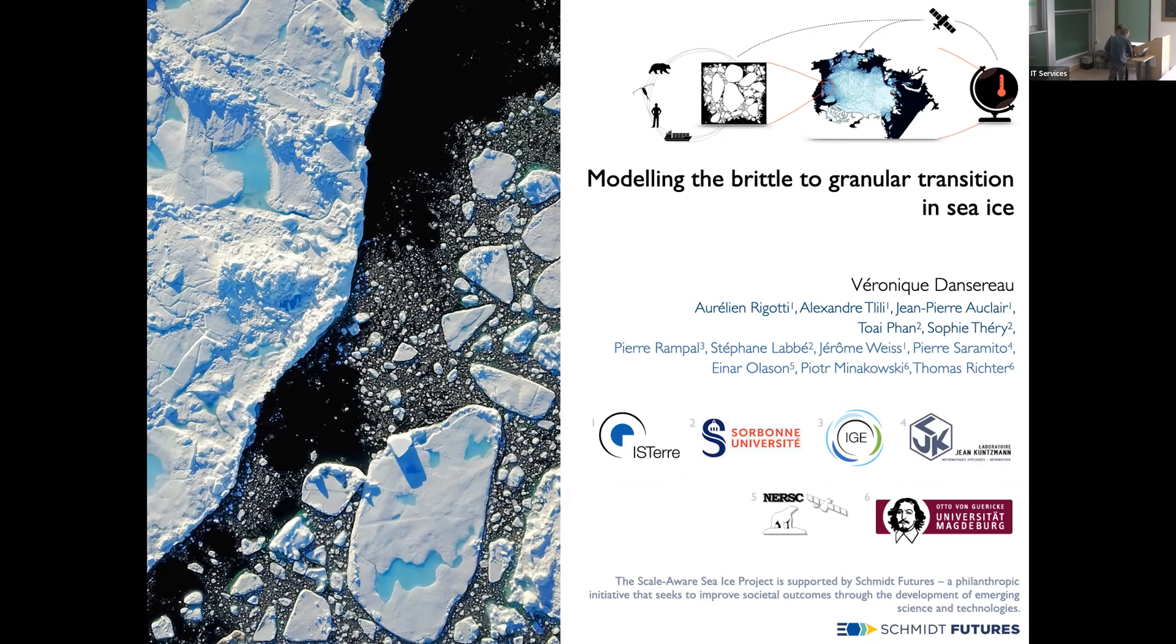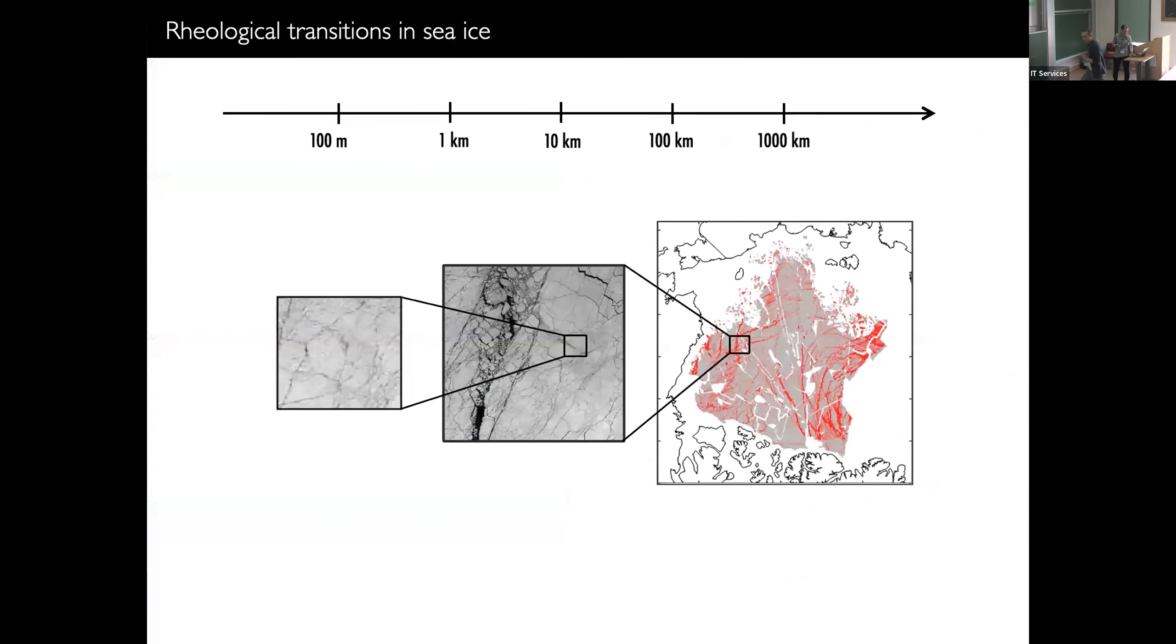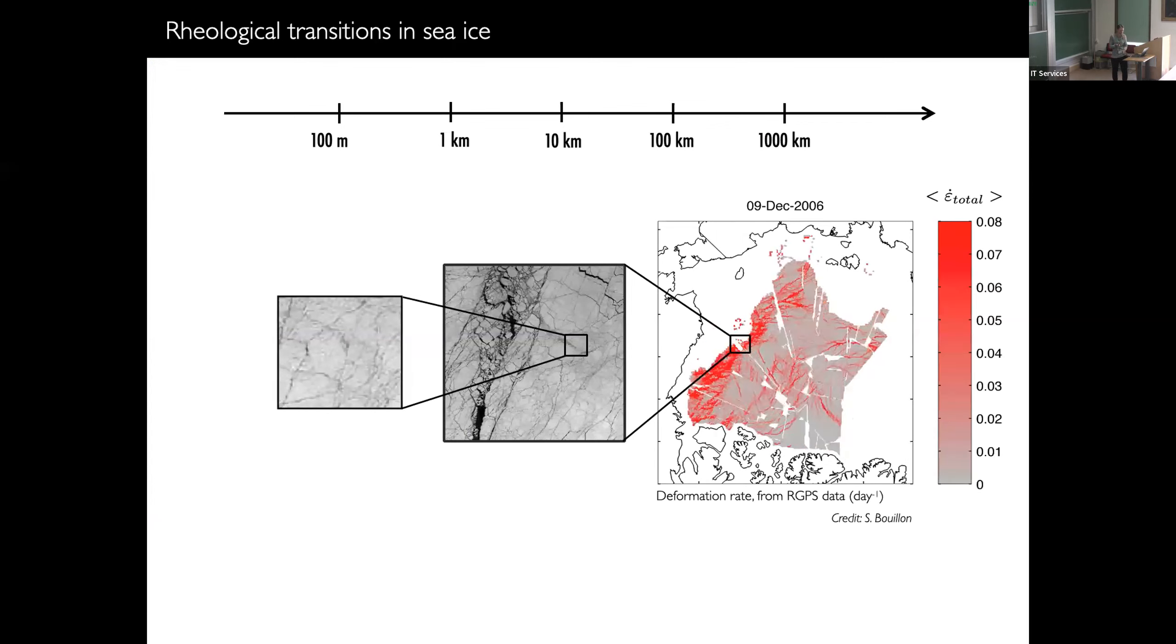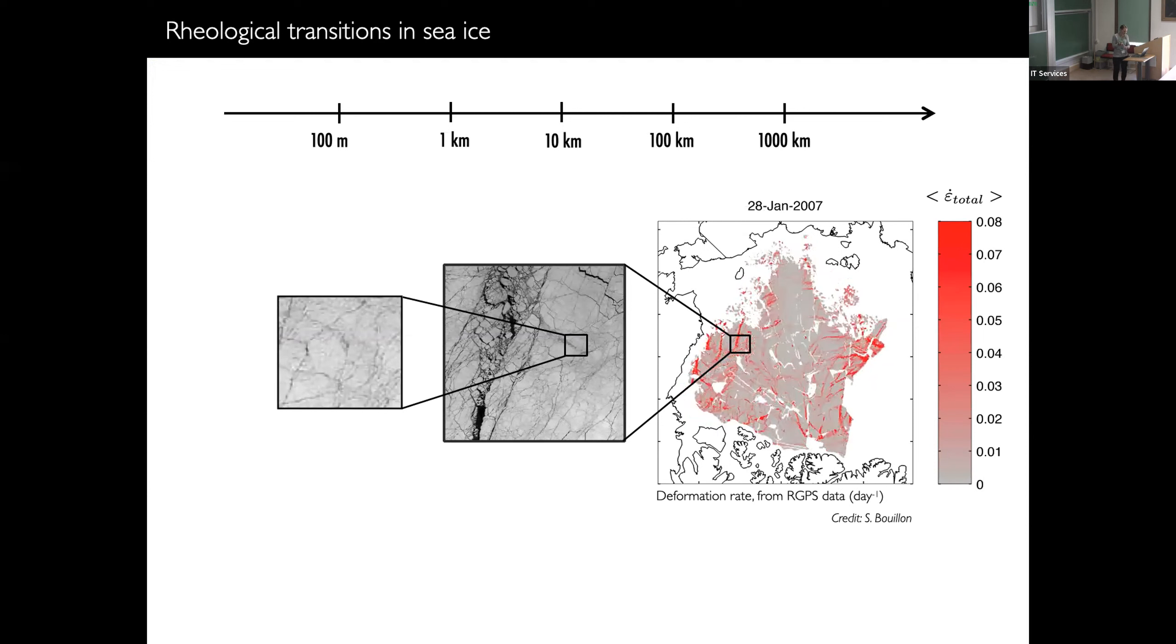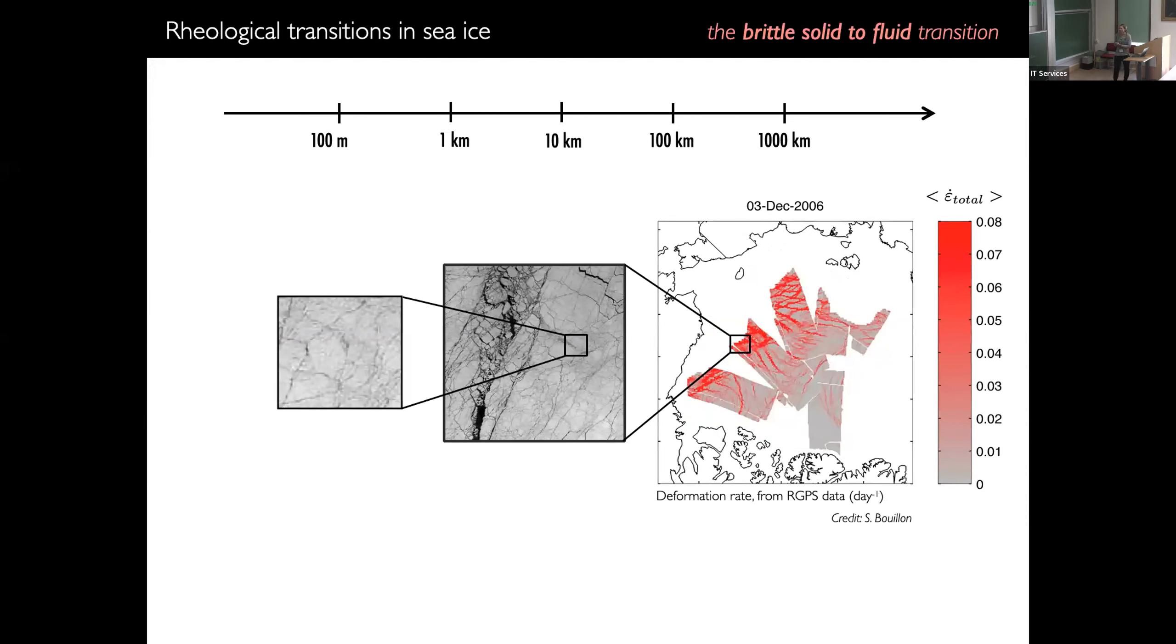So just a few words about what I call a rheological transition in sea ice. We know that sea ice takes a broken up aspect over a very wide range of time and space scale, but we also know that once it's all broken up, it can actually flow under the action of the winds and the ocean current. I like to call this a transition between something that's a solid, a brittle solid, but once it's all broken up, it actually can flow like a fluid. So it's a brittle to fluid transition.